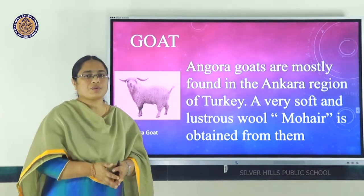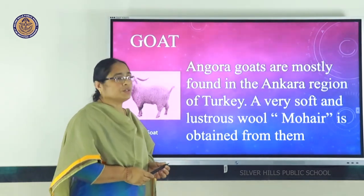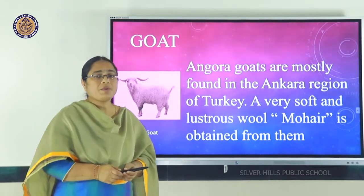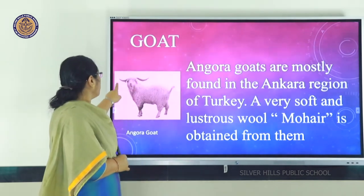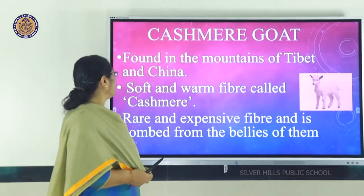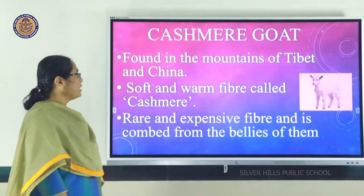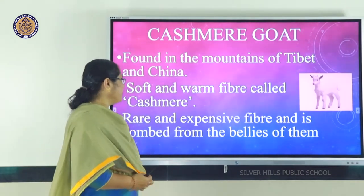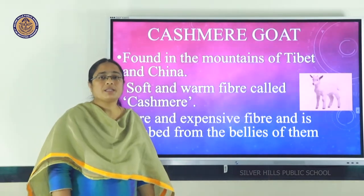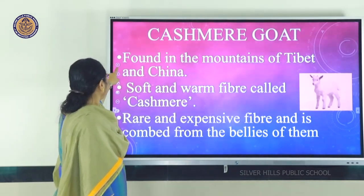Besides sheep, we get wool from goats. Angora goats are mostly found in the Angora region of Turkey and produce a very soft and lustrous wool called mohair. Kashmir wool is obtained from the Kashmir goat, found in Tibetan China. This wool is soft, warm, expensive, and rare. Pashmina shawls are made from Kashmir goat wool.